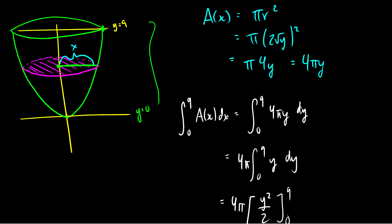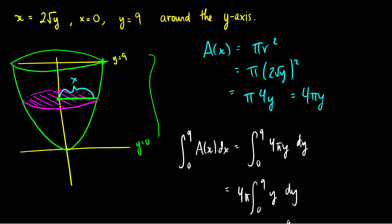So a pretty big volume. The two important parts here: first, I graphed it — that was the most important part. Second, identifying what the radius was. We just draw from our axis of revolution to where the curve is and figure out that distance. It's not always going to be the y or x axis we revolve around, which I'll show in the next video. But for these simple cases, we can determine the radius pretty simply. If you have any questions, please leave them in the comments below.